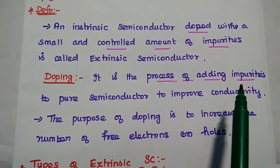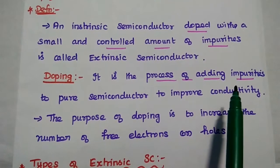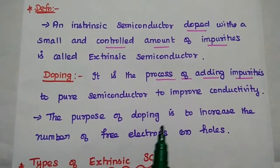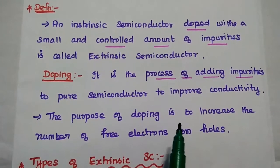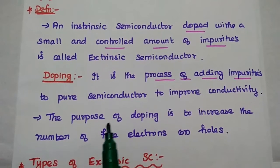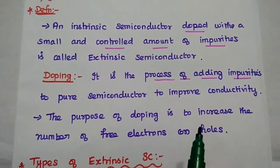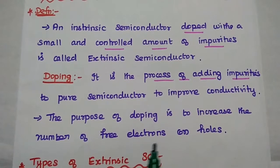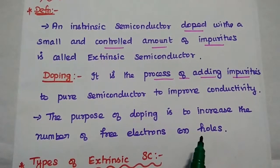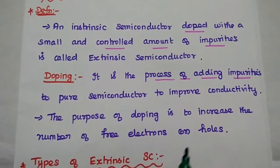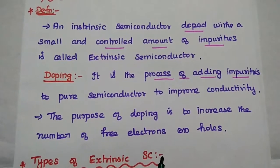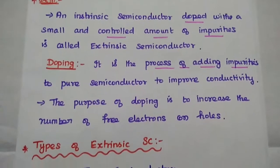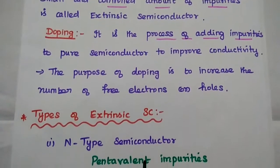The doping process is very important. It is defined as the process of adding impurities to a pure semiconductor to improve its conductivity. Here, impurity represents either a pentavalent atom or a trivalent atom. The purpose of doping is to increase the number of free electrons or holes, thereby increasing the conductivity of the semiconductor.